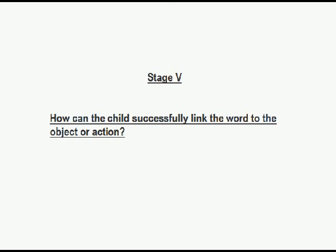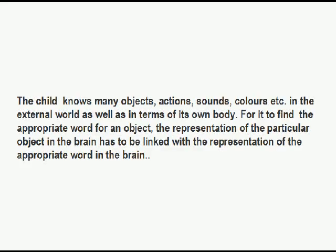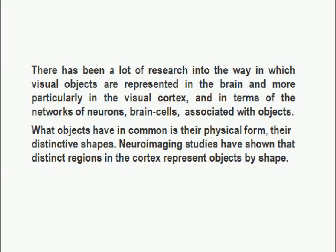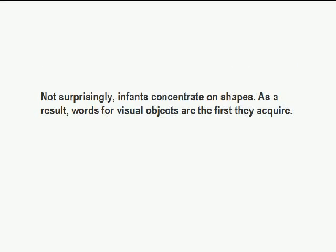On to stage five: how can the child successfully link the word to the object or action — or should I say, link the object or action to the word? The child knows many objects, actions, sounds, colours, etc., in the external world as well as in terms of its own body. For it to find the appropriate word for an object, the representation of the particular object in the brain has to be linked with the representation of the word in the brain. There has been a lot of research into the way in which visual objects are represented in the brain, in the visual cortex, and in terms of networks of neurons associated with objects. What objects have in common is their physical form, their distinctive shapes. Neuroimaging studies have shown that objects are recorded in terms of their shape. Not surprisingly, infants concentrate on shapes as a result.